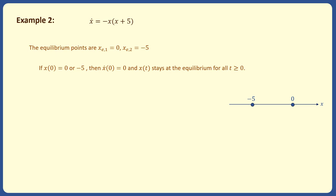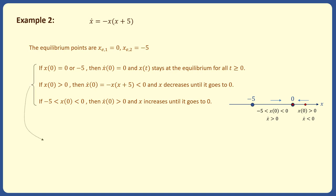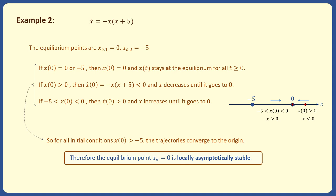We now check if the two equilibrium points of the system are locally asymptotically stable or not. If x(0) is positive, then x_dot(0), which is equal to -x(x+5), is less than 0, and therefore x decreases until it goes to the origin. If the initial condition is between -5 and 0, then x_dot is positive, so x increases until it reaches the origin. So for all initial conditions greater than -5, the trajectories converge to the origin, which means the equilibrium point at 0 is locally asymptotically stable. Finally, if the initial condition is less than -5, then x_dot is negative, so x(t) goes to minus infinity, and the equilibrium point at -5 is unstable.